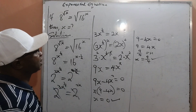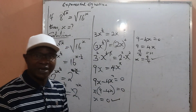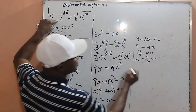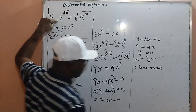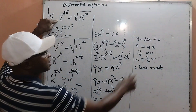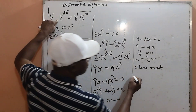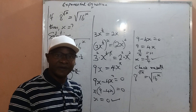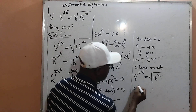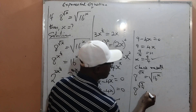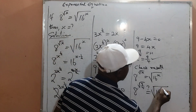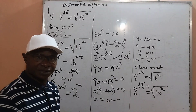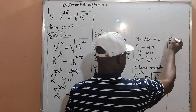I got two results: x equals 0 and x equals 9 over 4. Let me substitute x equals 9 over 4 into the original equation to verify. So we have 8 raised to the power square root of 9 over 4, equal to the square root of 16 raised to the power 9 over 4. From the left hand side, the square root of 9 over 4 is simply equal to 3 over 2. Therefore, this becomes 8 raised to the power 3 over 2.